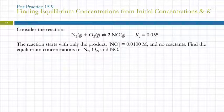Let's do a more interesting example: N₂ plus O₂ giving 2NO. The reaction starts with only the product and no reactants. Find the equilibrium concentrations of all three species.